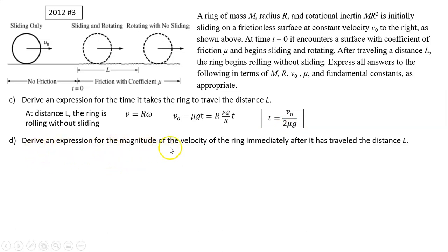Part d: Derive an expression for the magnitude of velocity of the ring immediately after it's traveled distance L. We know how long it has taken. We also know velocity equals v₀ minus μgt. We know this expression. You simply substitute time into this expression. μg and μg cancels. So it's v₀ minus v₀ over 2. v equals v₀ over 2. So that is the velocity. As you can see, velocity has decreased from v₀ to v₀ over 2 because friction reduces velocity.